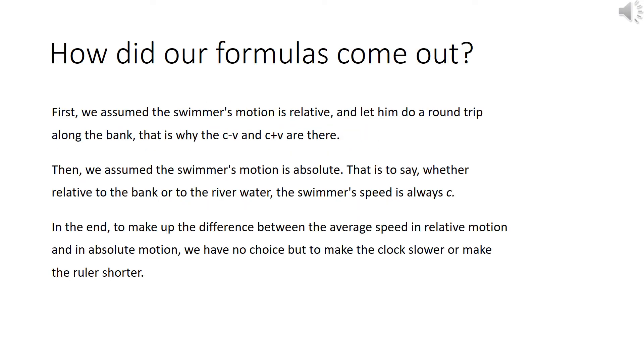Let's recap for a second. How did our formulas come out? First, we assume the swimmer's motion is relative and let them do a round trip along the bank. That is why the C minus V and C plus V are there. Then, we assume the swimmer's motion is absolute. That is to say, whether relative to the bank or to the river water, the swimmer's speed is always C.